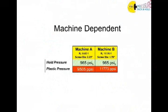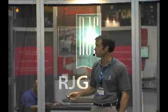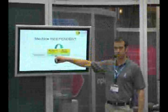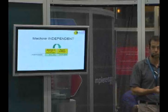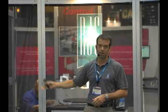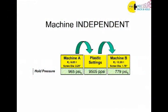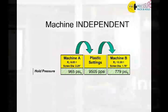What we need to do — another way of looking at that — here's my 965 PSI setting and the difference on the two machines as plastic pressure in front of the screw. When we have a machine-independent setup sheet, we take our setting from machine A, multiply it times the intensification ratio of machine A to get our plastic pressure in front of the screw. Then we do basic math to divide out the intensification ratio of machine B, and the result is our actual hold pressure setting to enter into the controller on machine B.